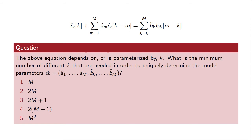A question related to that: if we have the Yule-Walker equation which holds for any time lag k, and we wish to use these equations to solve for the parameters of the model, how many different values of k would we need? Would we need capital M values, 2M values, 2M plus 1 values, 2 times M plus 1, or M squared? The correct answer is option number 3 — we would need 2M plus 1 equations to solve for the parameters. The reason is that we have 2M plus 1 parameters in our model, and we need as many equations as unknowns in order to have a unique solution.